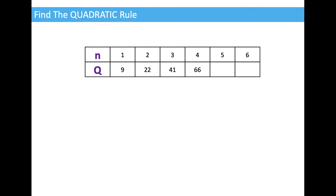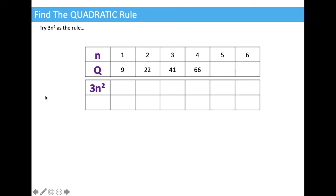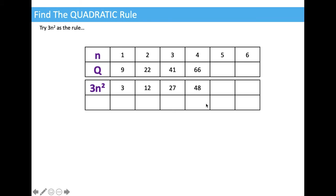There is our original table again, and I'm going to think: what if the rule was just 3n squared? 3 times 1 squared gives me 3. 3 times 2 squared gives me 3 times 4, which is 12. 3 times 3 squared gives me 27. And 3 times 4 squared gives me 3 times 16, which is 48.